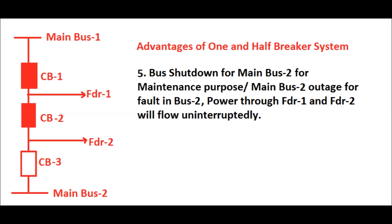Similarly, consider a bus shutdown for main bus 2 for maintenance, or an outage of main bus 2 due to a fault. Power through feeder 1 and feeder 2 can still flow uninterruptedly via main bus 1, with CB1 and CB2 in closed positions. Feeder 1 gets power through main bus 1 via CB1 in closed position, and feeder 2 gets power through main bus 1 via CB1 and the tie CB in closed positions.